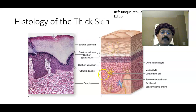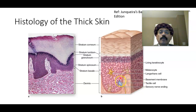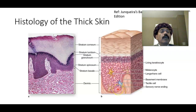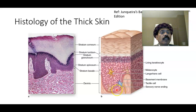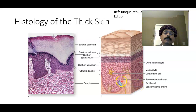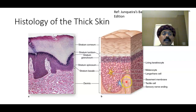The layers are: stratum basale, stratum spinosum, stratum granulosum, stratum lucidum, and stratum corneum. The basal layer is also called stratum germinativum. From here the other cells are generated — we also see some mitosis, so these cells are replaced by the stratum basale, the germinating cell layer.